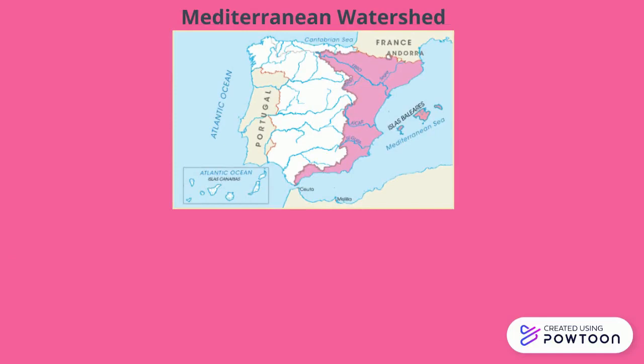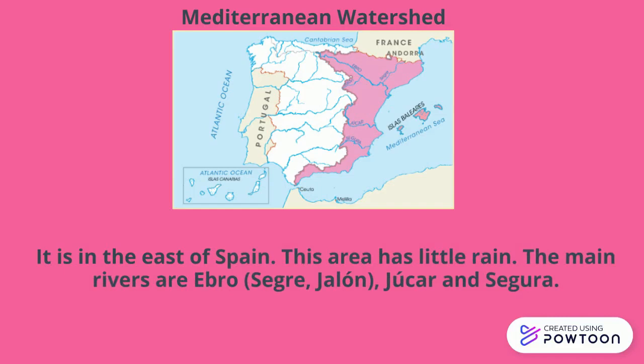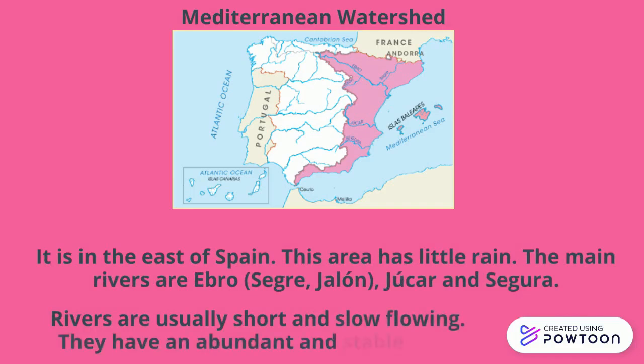Mediterranean watershed. It is in the east of Spain. This area has little rain. The main rivers are Ebro, with Segre and Jalón as tributaries, Júcar, and Segura. Rivers are usually short and slow flowing, and they have an abundant and stable flow.